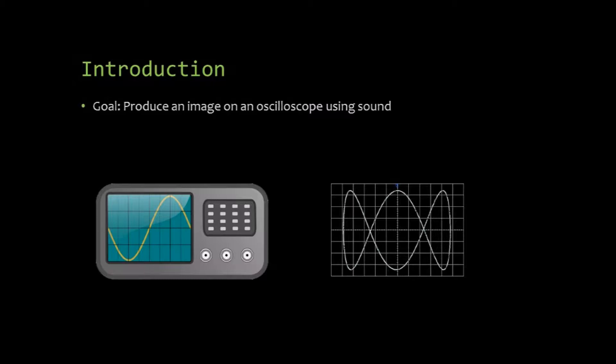Usually, an oscilloscope displays a voltage signal that varies with time which produces a waveform like the image on the left. The oscilloscope in my project displays a voltage signal that varies against another voltage signal. This is commonly called XY mode and displays waveforms like the image on the right.